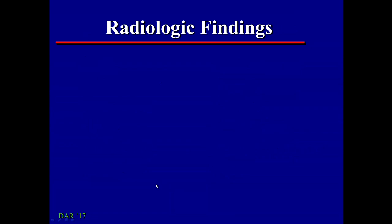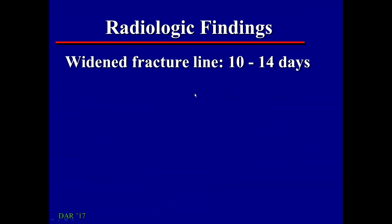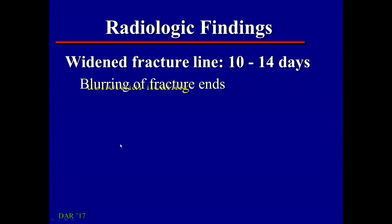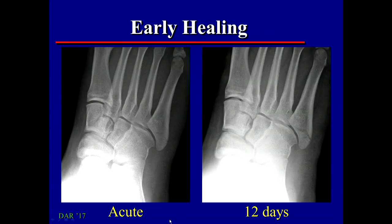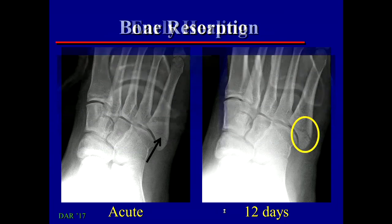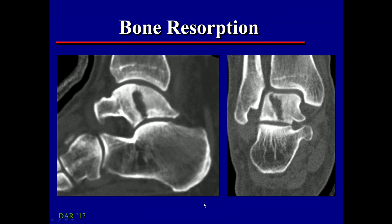The radiographic findings of fracture healing start with widening of the fracture line, and this happens in the first 10 to 14 days. This represents the stage where the dead bone is being carted away. We see this as blurring of the fracture ends as well as widening of the line. Note that widening of the fracture line is the first stage of both normal and abnormal fracture healing. Here's a patient with an acute fracture of the fifth metatarsal — 12 days later, that thin sharp line has become a wider line. Here's a fracture of the talus, a transchondral fracture, where there's been a lot of bone resorption along that fracture line — that can still be normal or abnormal.